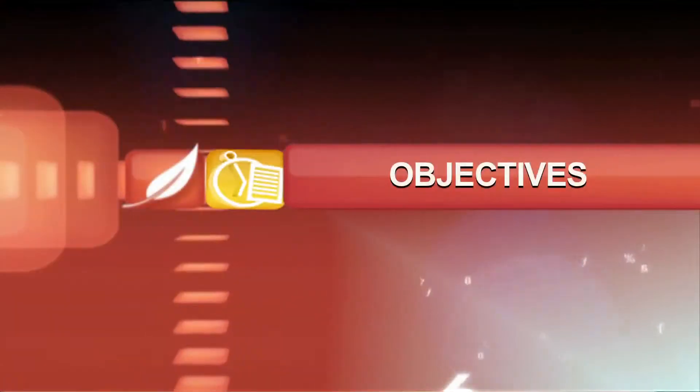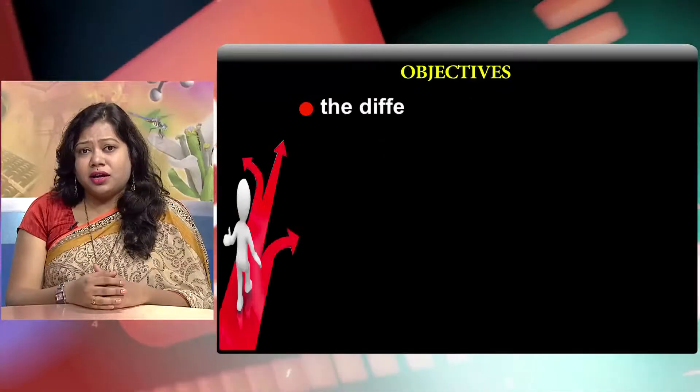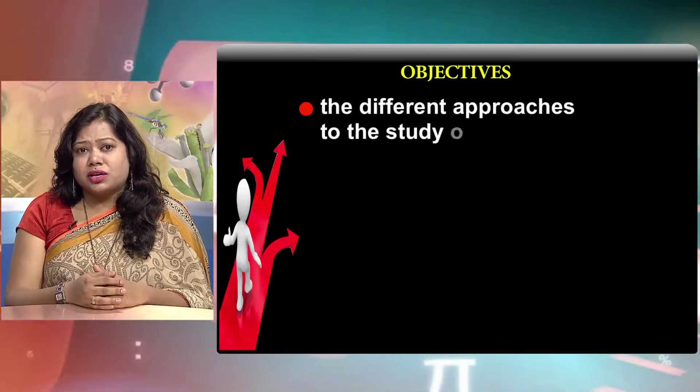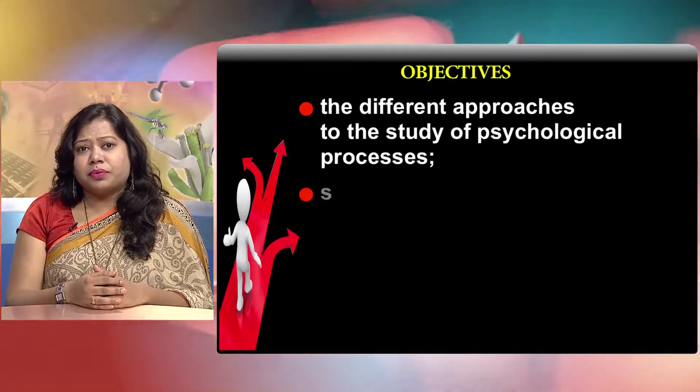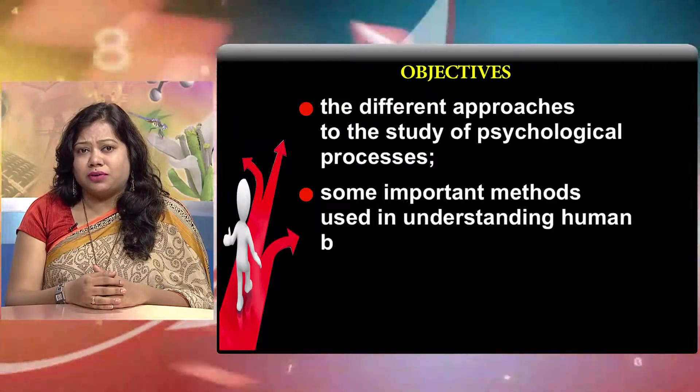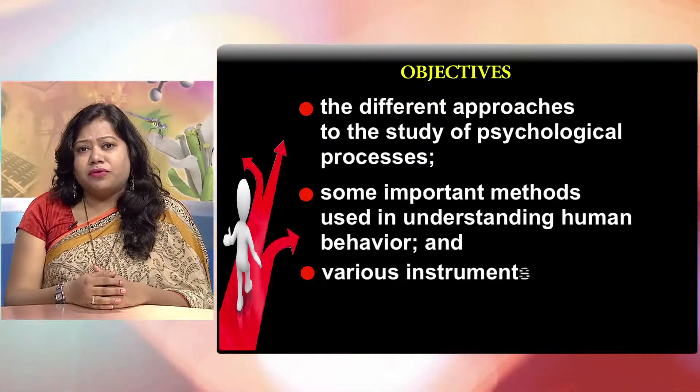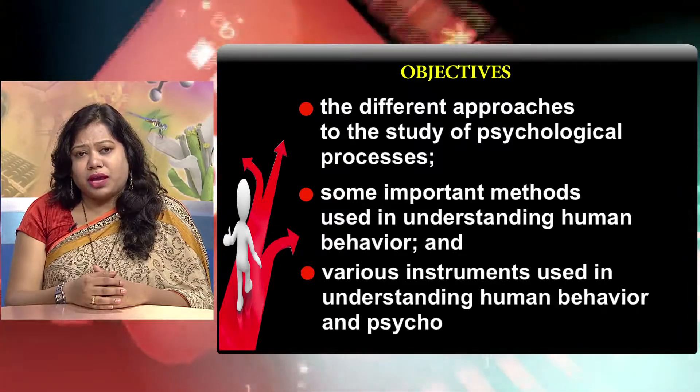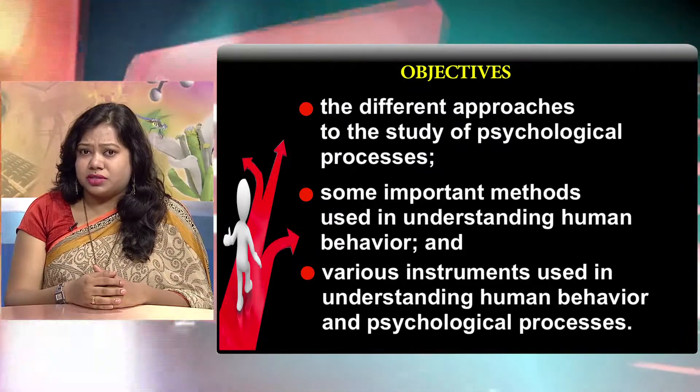In order to obtain responses from subjects, a number of psychological tools or instruments are used that constitute the basic data which are analyzed to study human experiences, mental processes and behaviors. The objectives of the chapter entitled 'Methods of Psychology' are to explain the different approaches to the study of psychological processes, describe some important methods used in understanding human behavior, and describe various instruments used in understanding human behavior and psychological processes.